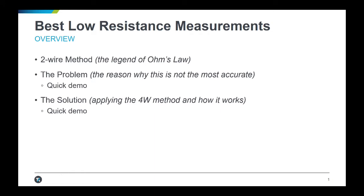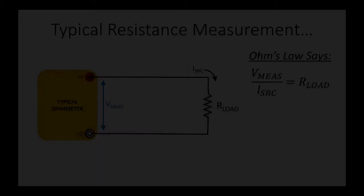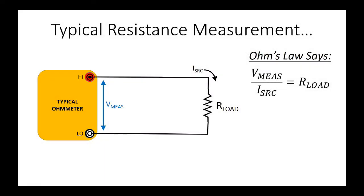The resistance function of your typical ohmmeter or multimeter will source a known current to your device under test (the resistor) and perform a voltage measurement at the terminals where the test leads are inserted. The resistance value is calculated using the sourced current and measured voltage values. When your resistance values are greater than 100 ohms, this is probably fine.